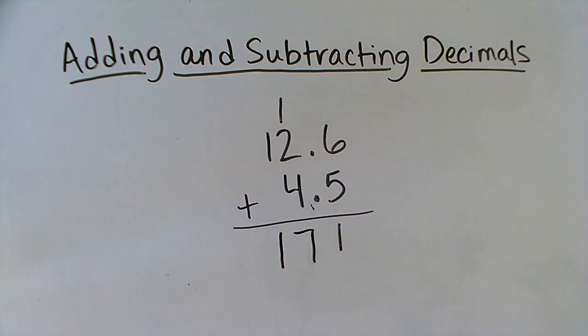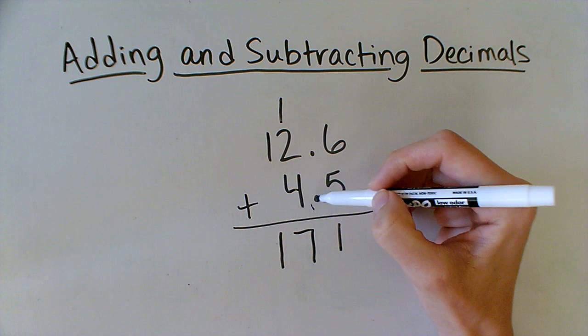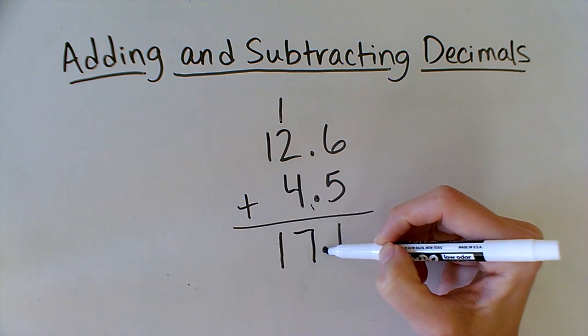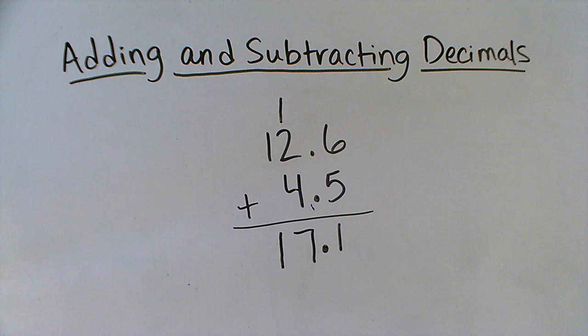One important difference here is that wherever the decimal is in the problem, it also needs to stay lined up in the answer. So 12.6 plus 4.5 equals 17.1.